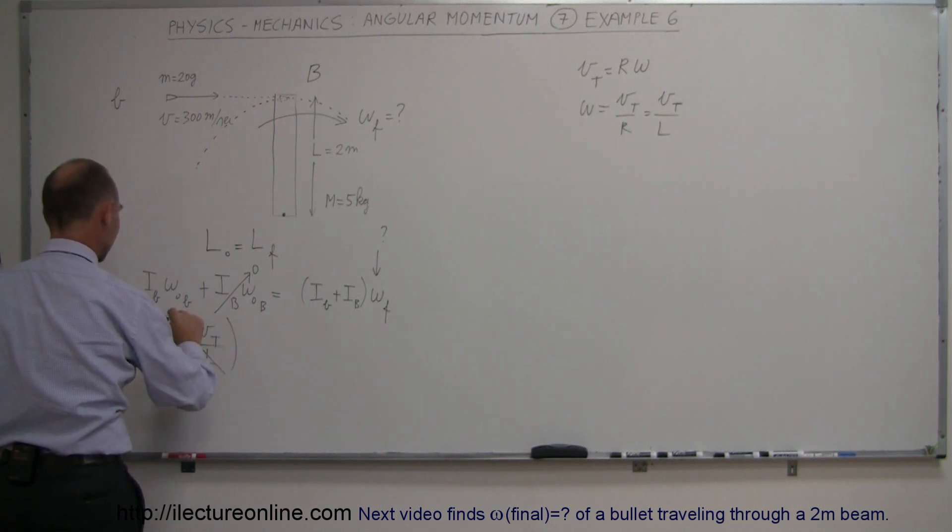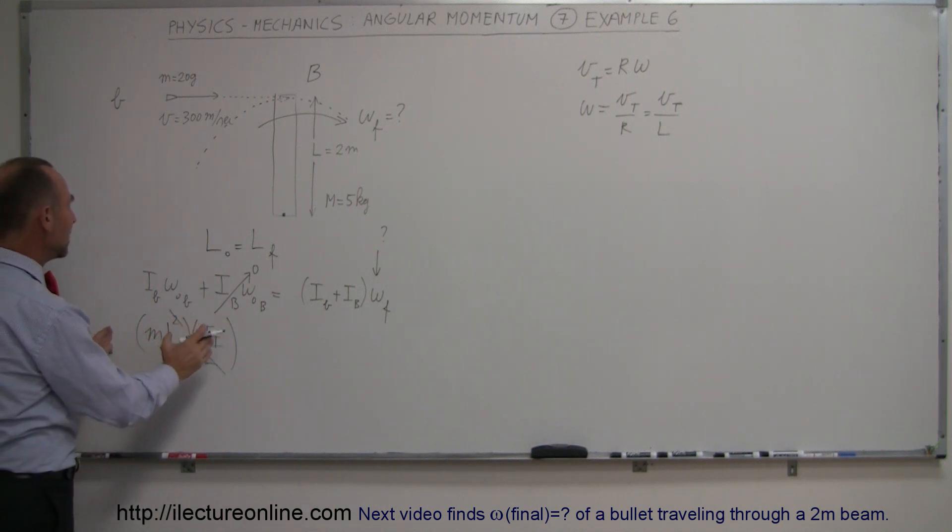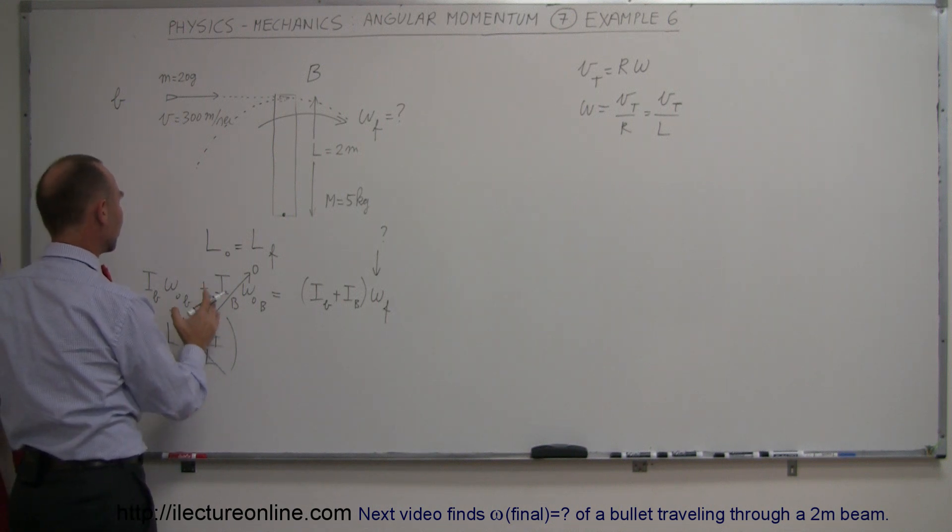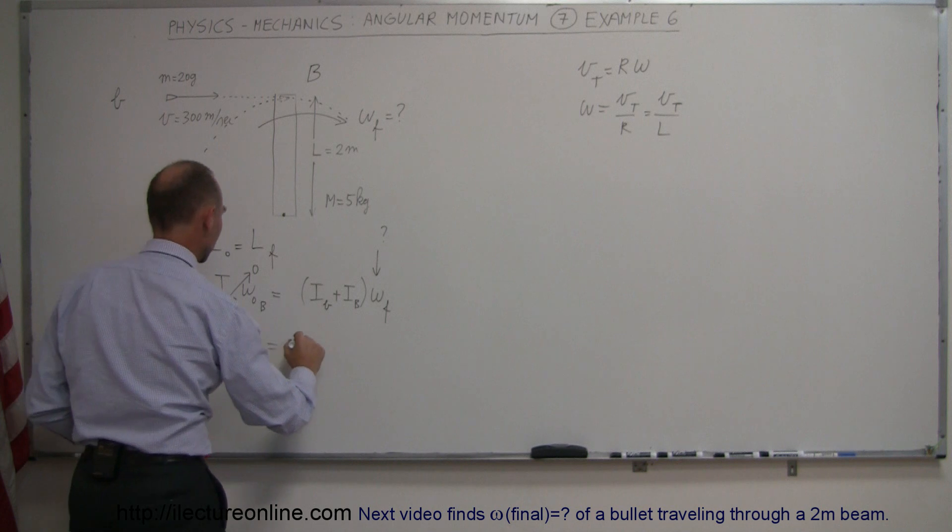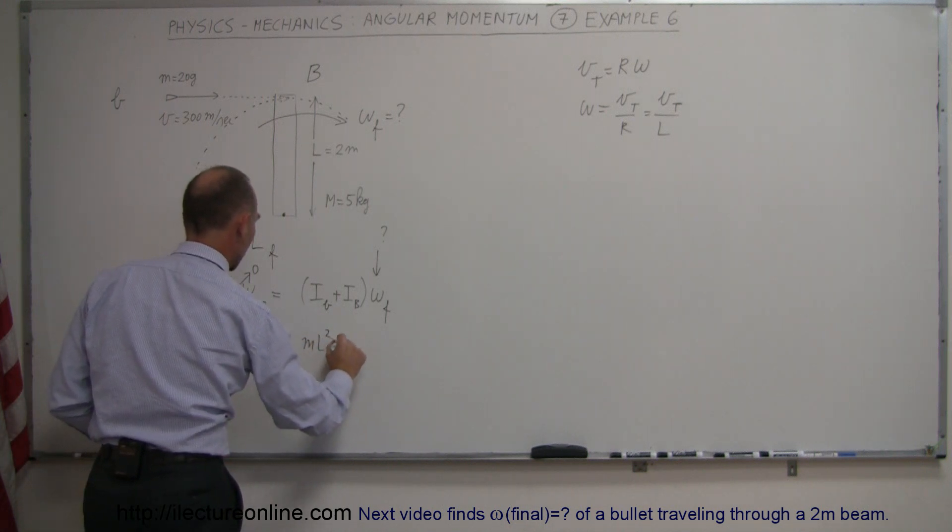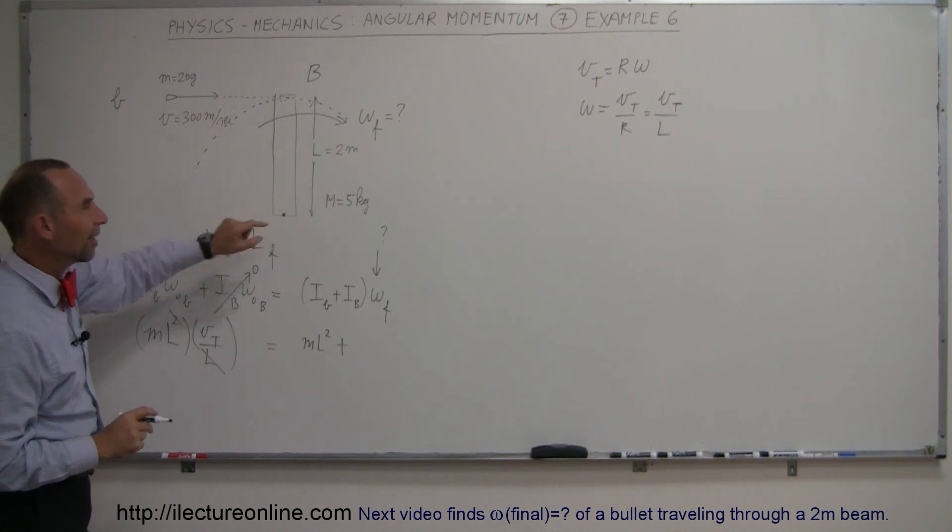Multiplied times the angular velocity which would be the tangential velocity divided by the length. Notice this L cancels that L so we have MLV or MRV however you want to look at it. That's going to be the angular velocity of the bullet before the collision.